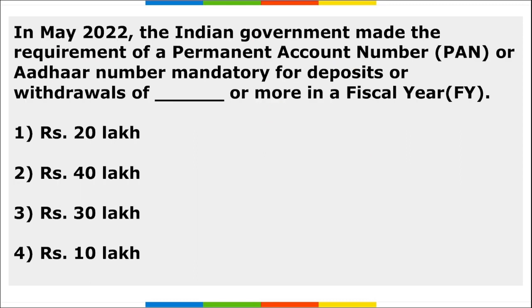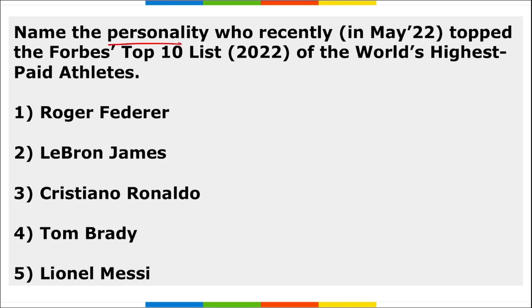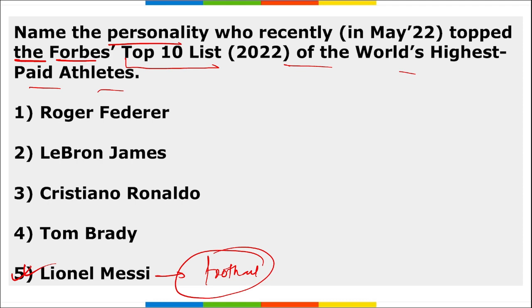The Government of India made PAN number or Aadhaar card mandatory for deposits or withdrawals of ₹20 lakh or more in a fiscal year. Lionel Messi, the Argentine footballer, topped the Forbes Top 10 list of the world's highest-paid athletes.